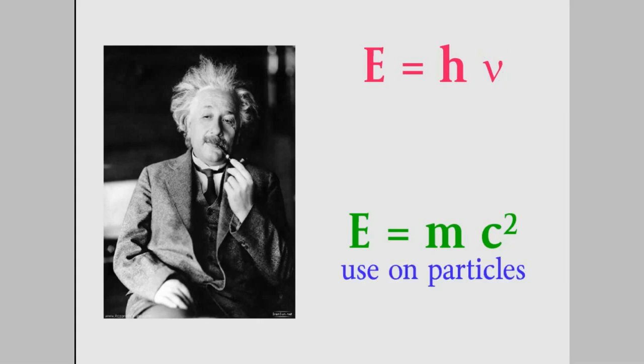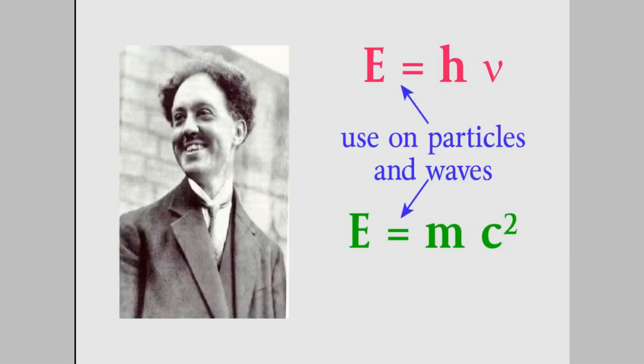De Broglie noticed that we used the second equation to understand the energies of particles, but the first equation is for the energy of light, which, up until Einstein, people usually thought of as being a wave. So de Broglie had a new idea. He thought, if particles can act like waves, then both these equations should apply.